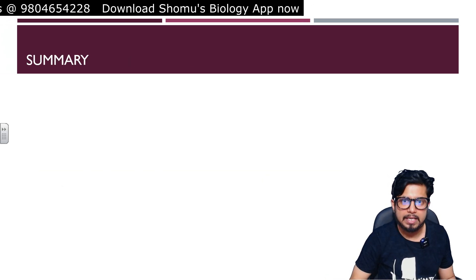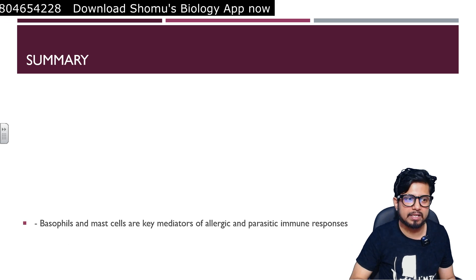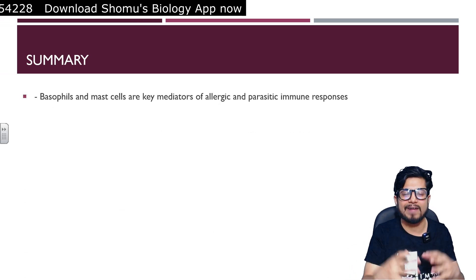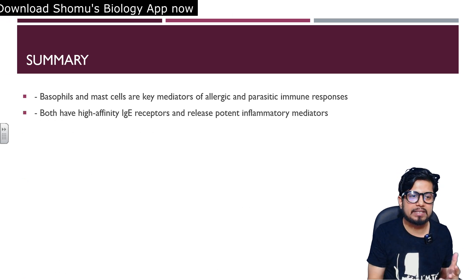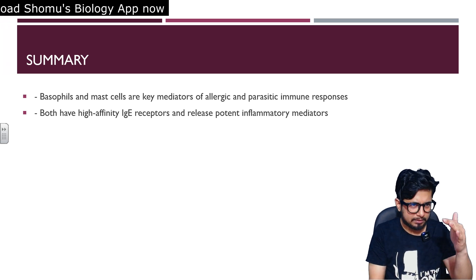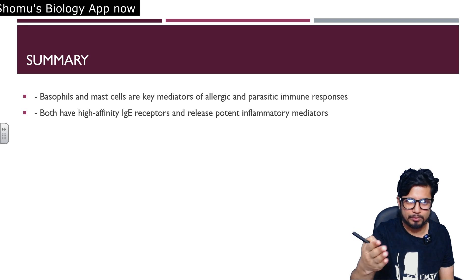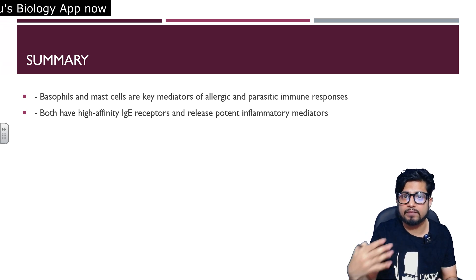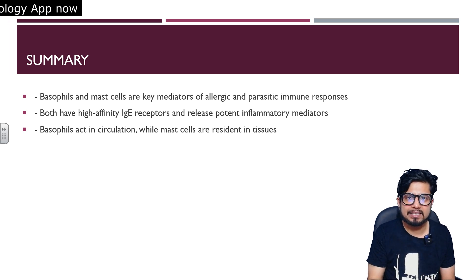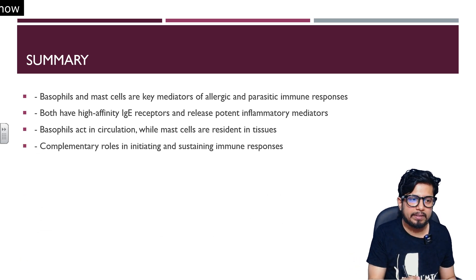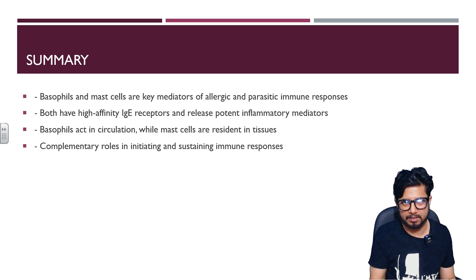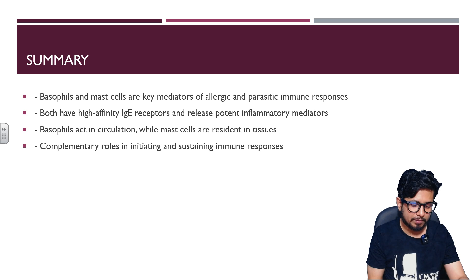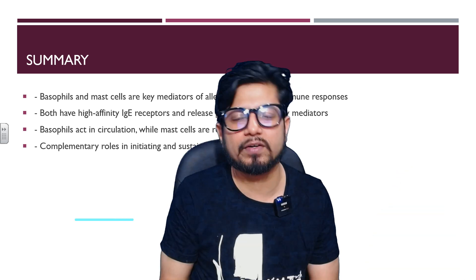In summary, basophils and mast cells are key mediators of allergic and parasitic immune responses. Both have high affinity for IgE, with mast cells having slightly higher affinity, and both release potent inflammatory mediators. Basophils act in the circulation while mast cells reside in the tissues, playing complementary roles in initiating and sustaining immune responses.